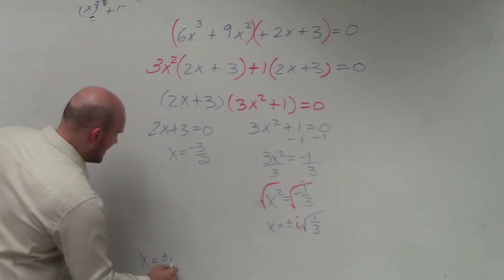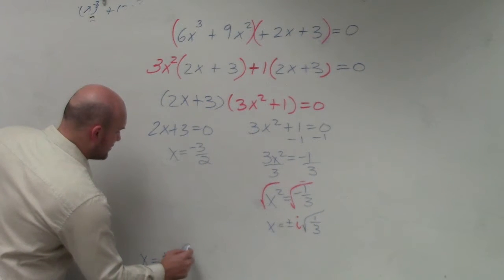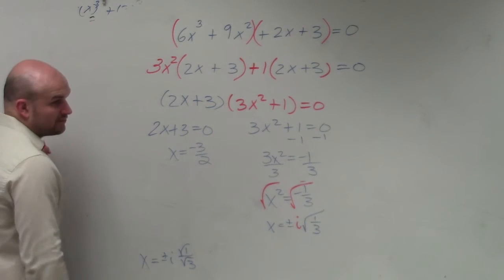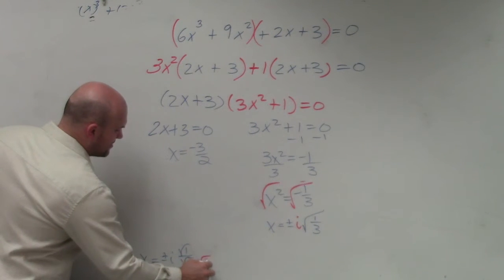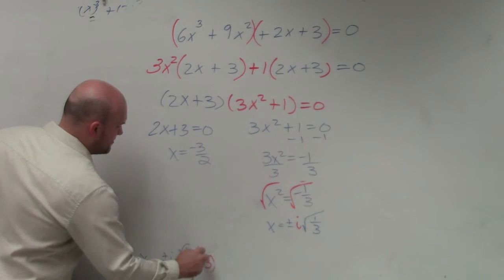x equals plus or minus i times the square root of 1 over the square root of 3. Now, ladies and gentlemen, the square root of 1 is just 1. But I want to rationalize my denominator. So I multiply by the square root of 3 on the top and the bottom.